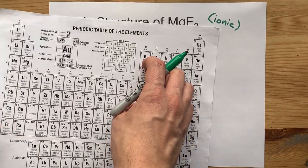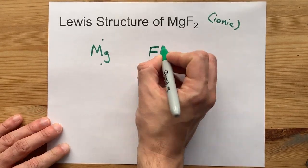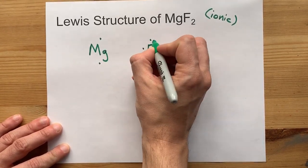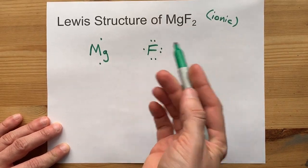Fluorine is in group 17. That means it brings 7 valence electrons with it. 1, 2, 3, 4, 5, 6, 7. Notice how I spread them out before I doubled them up.